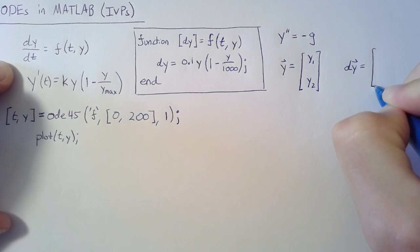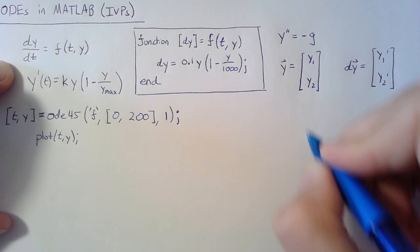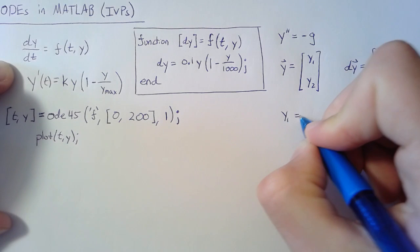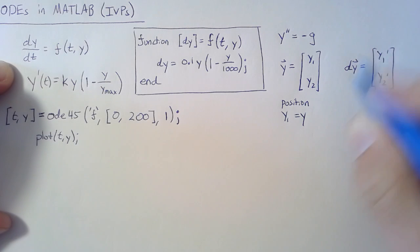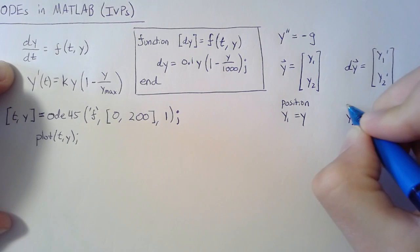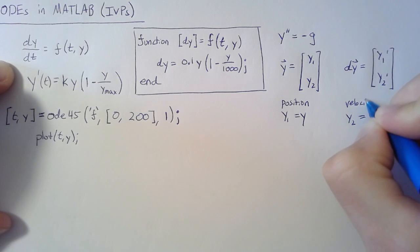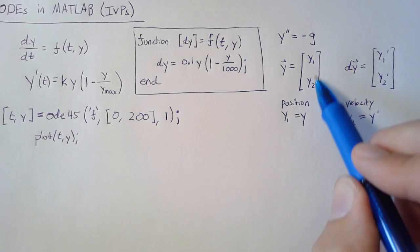We're going to set y1 equal to y, and this will be our position, or our height in the air in this case. And we're going to set y2 equal to y' or our velocity.